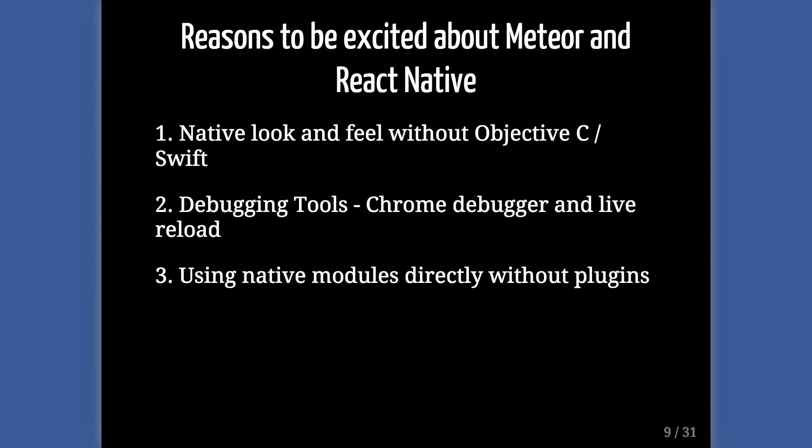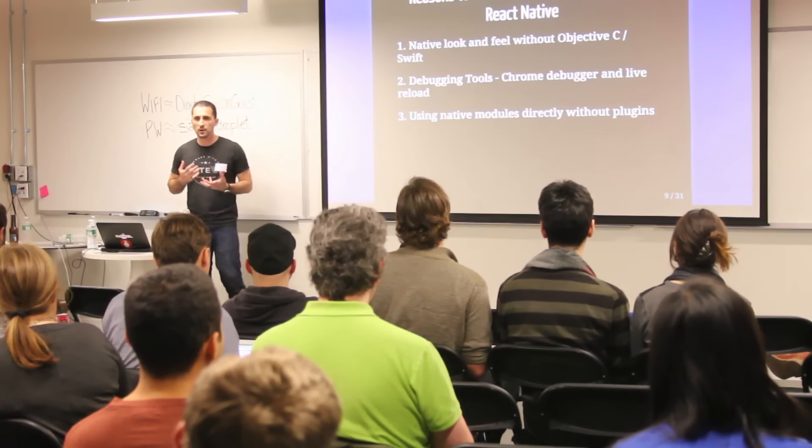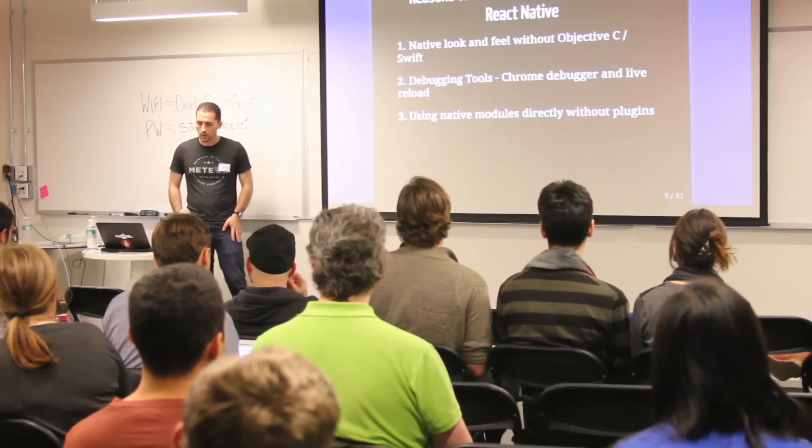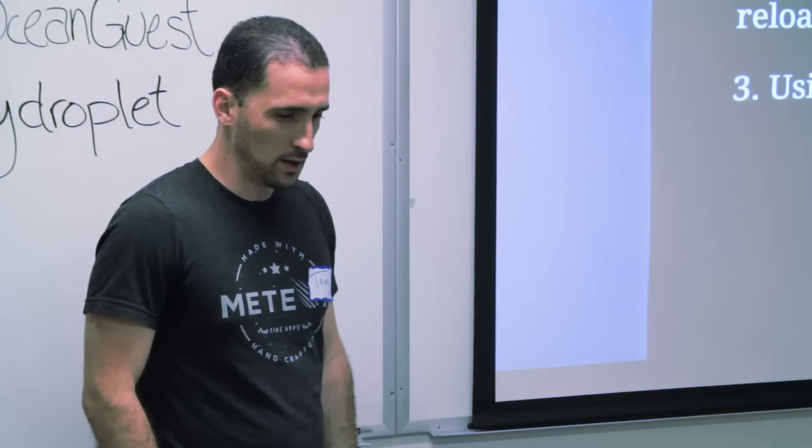All right, so reasons to be excited about Meteor and React Native. One is, it's just better than what's out there. I know that the Meteor team has integrated Cordova as a kind of a mobile solution. And at the time of them doing that, it makes perfect sense. But I feel that React Native has a lot to offer. Instead of taking a web app and porting it into a mobile app, you have access to the native UI components. Native modules that are in Swift and in Java. And it looks and feels like a native app without the pain of learning Swift or Java. So that is really cool.